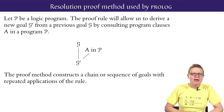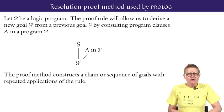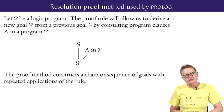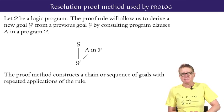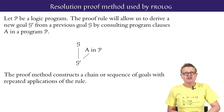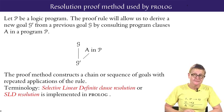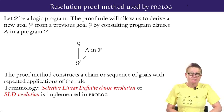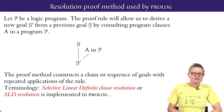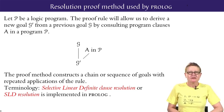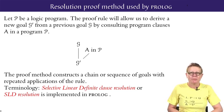Let P be a logic program and G a goal. The proof rule within Prolog is going to allow us to derive a new goal G prime from the given goal G by consulting clauses A in P. Repeated applications of the rule produce a chain or sequence of goals. Technically the rule implemented in Prolog is called SLD resolution standing for Selective Linear Definite Clause Resolution and remembering that definite clause is an alternative name for program clause.